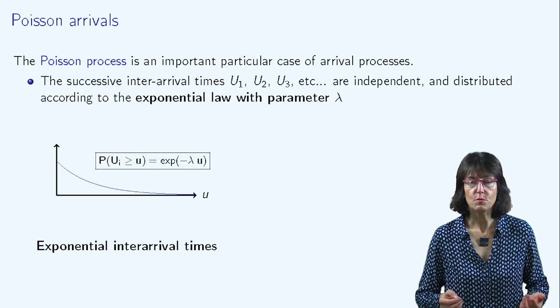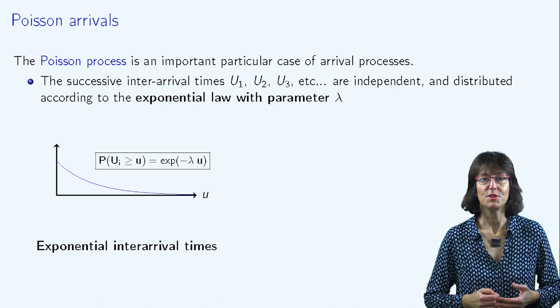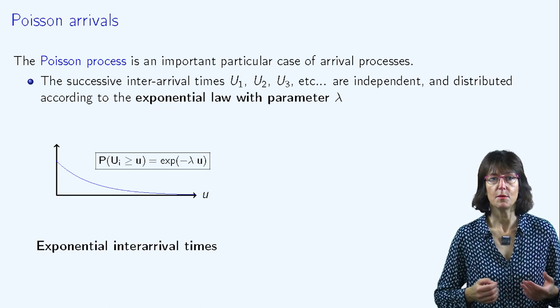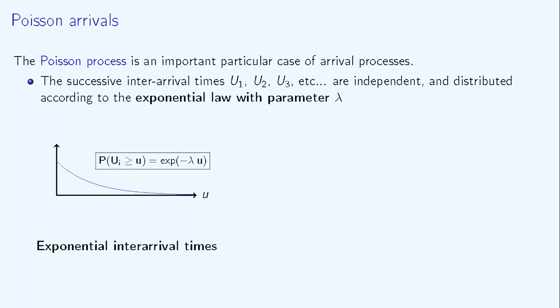It's very often assumed that the law of successive interarrival times is an exponential distribution, whose parameter is classically denoted as lambda. The probability that the interarrival time ui is greater than a given threshold u is thus equal to the exponential of minus lambda u.